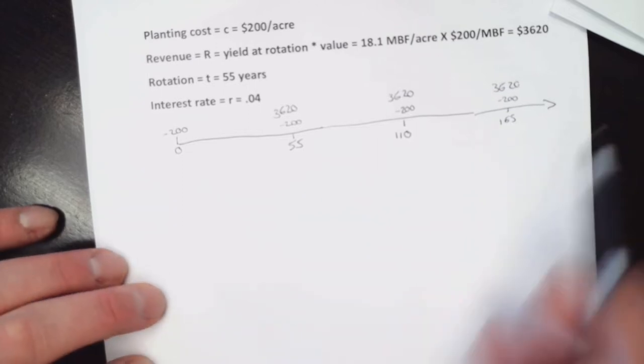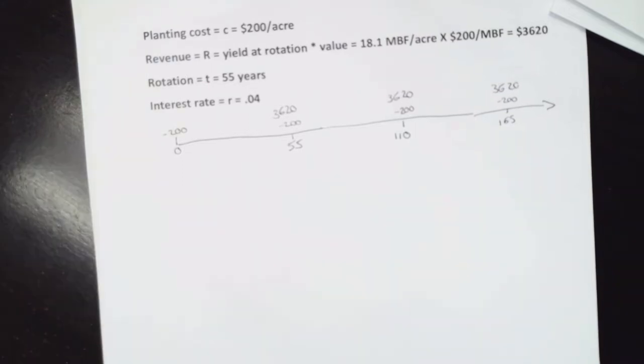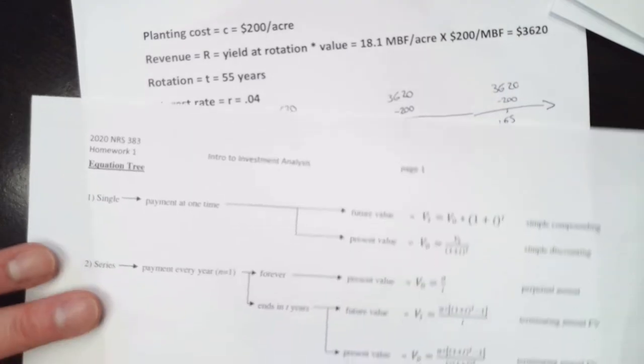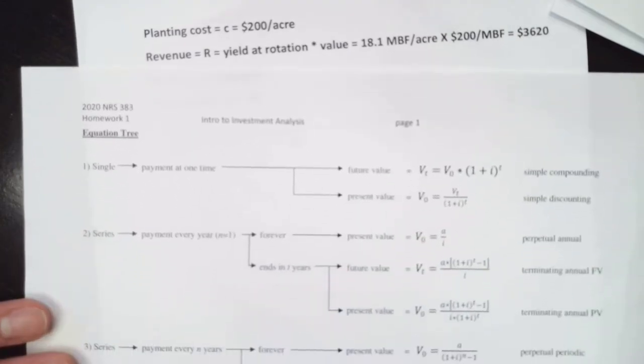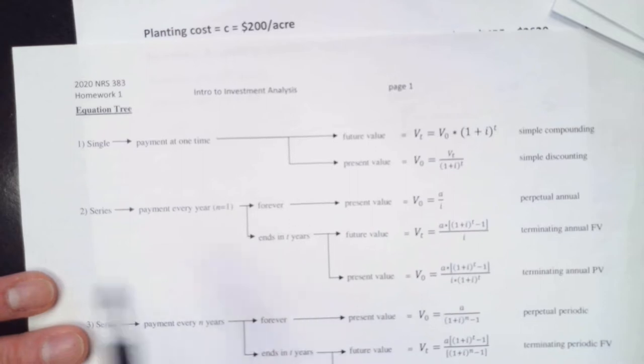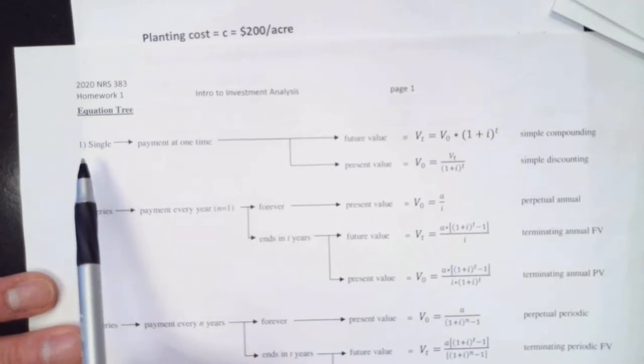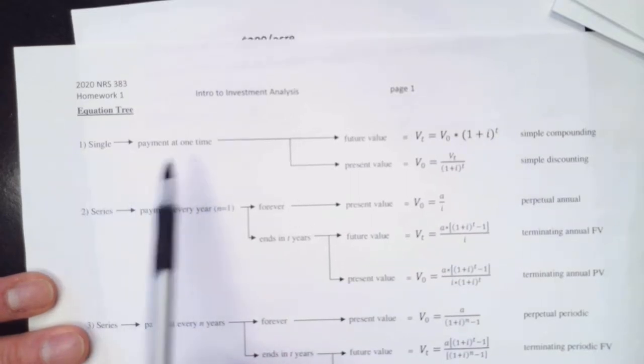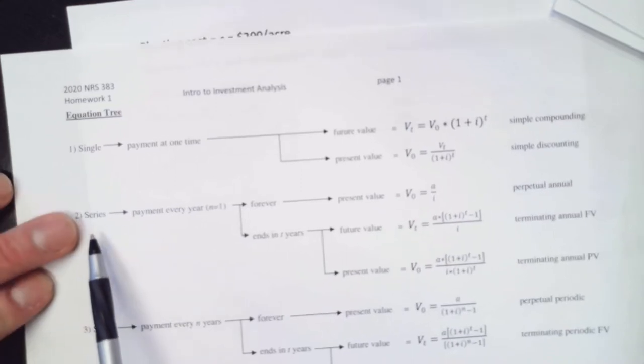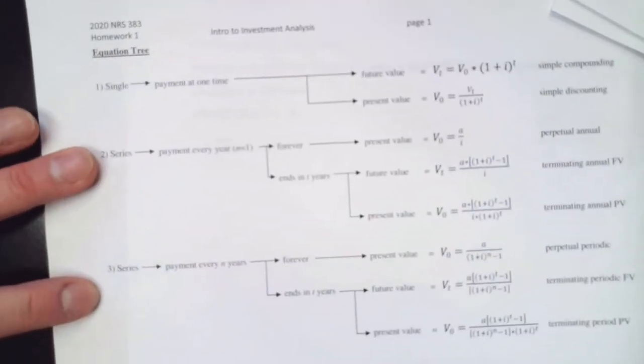Then we want to think about what we have going on here. We can think about it in terms of what we have on our equation tree. This is going to look a lot like what we're doing in the homeworks, right? We're going to start, are these going to be single sums? No, they're not going to be a payment at one time. They're going to be a series. So they're one of these two down here.